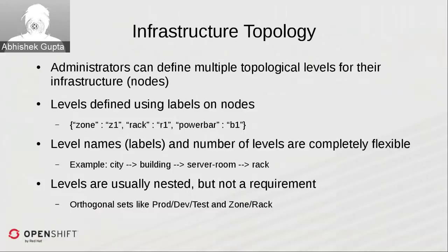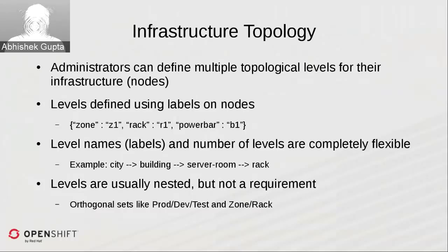Levels are usually nested, but that is not a built-in requirement — you can have orthogonal sets of node clusters. For example, you could have prod/dev/test as one set of categorization and an orthogonal set of zone and rack, where a zone could have nodes from both prod, dev, and test depending on your requirements.